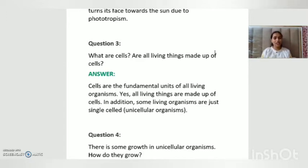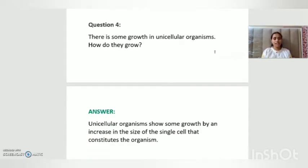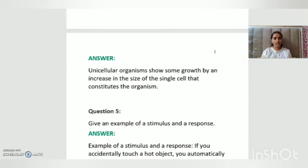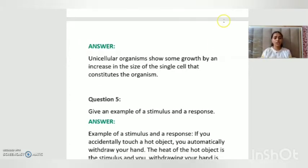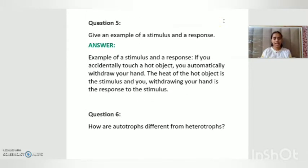Question number four: there is some growth in unicellular organisms — how do they grow? The answer is: unicellular organisms show some growth by the increase in the size of the single cell that constitutes the organism.